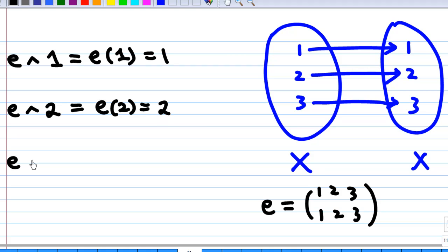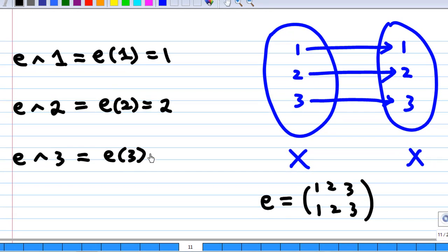How about e at 3? This is the image of 3 under e. Since e sent 3 to 3, the image of 3 is 3. So basically you can see from here that e acting on x gives you back x again.